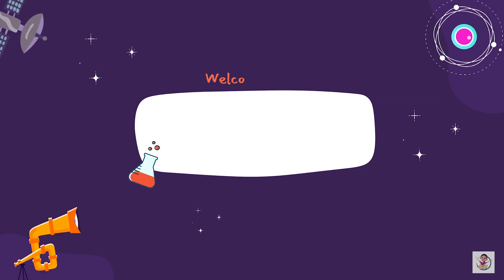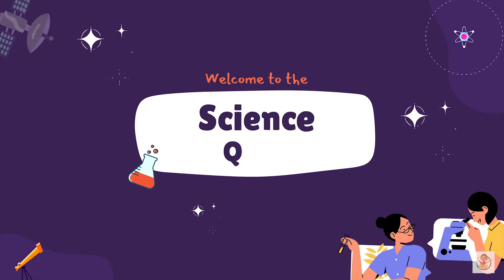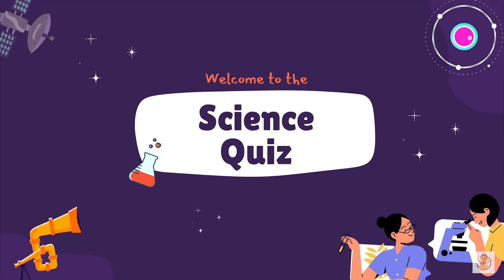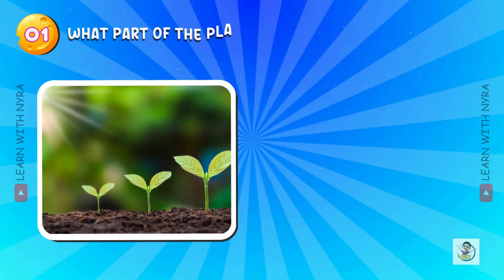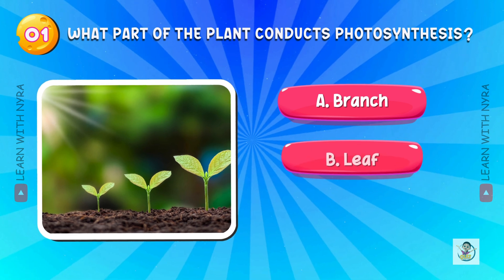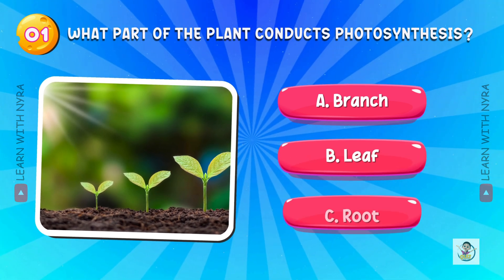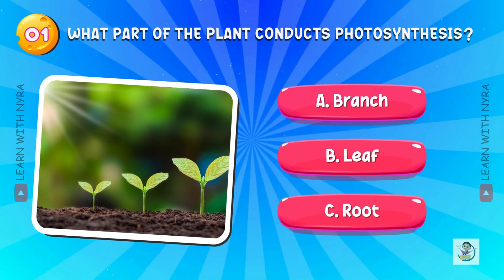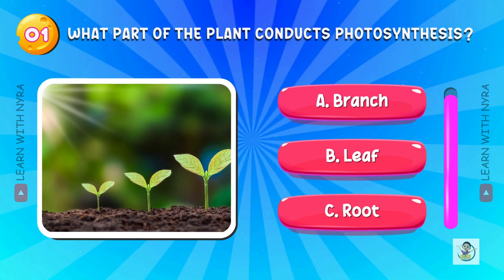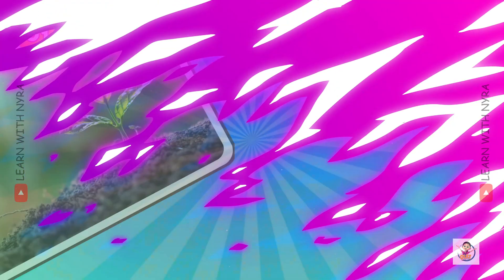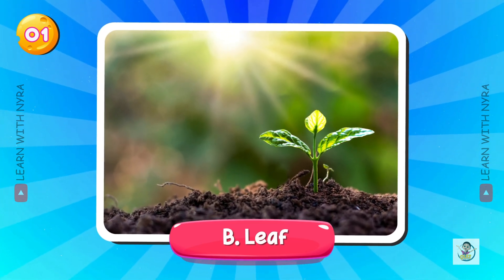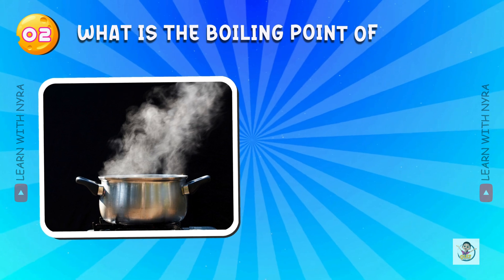Hello friends! Here's a fun general knowledge quiz, science edition. So let's get started. What part of the plant conducts photosynthesis? A. Branch, B. Leaf, C. Root. And the answer is B. Leaf.